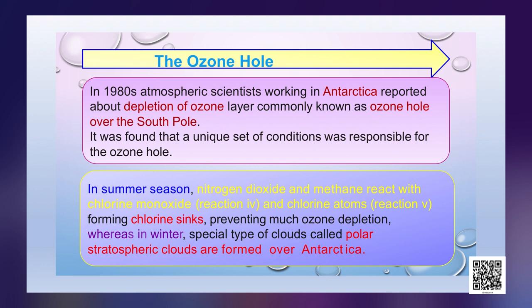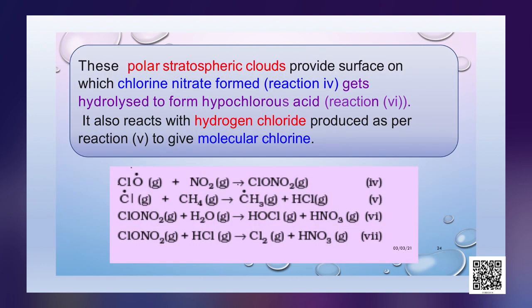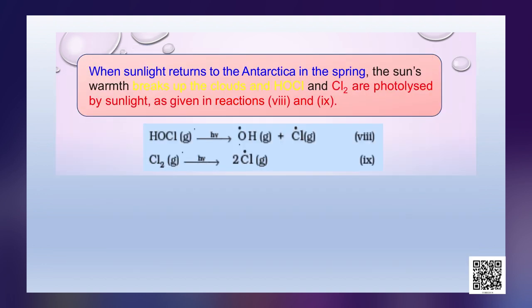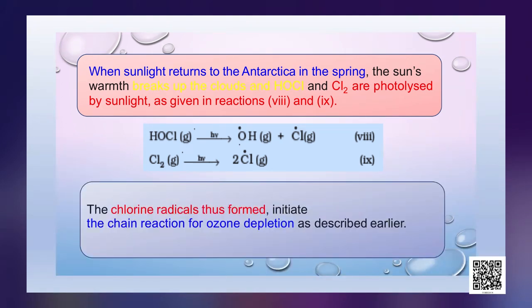In winter, special polar stratospheric clouds form over Antarctica. These clouds provide a surface on which chlorine nitrate gets hydrolyzed to form hypochlorous acid (HOCl). It also reacts with hydrogen chloride to give molecular chlorine (Cl2). When sunlight returns to Antarctica in spring, the sun's warmth breaks up the clouds and HOCl and Cl2 are photolyzed by sunlight. The chlorine radicals thus formed initiate the chain reaction for ozone depletion as described earlier.